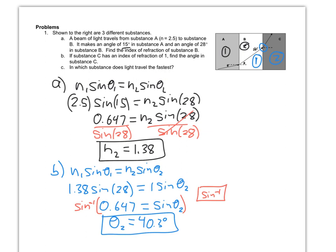The last question is conceptual: in which substance does light travel the fastest? That is substance C, because it has the lowest index of refraction, the lowest N value. We keep in mind that index of refraction measures how slow light travels, so the lower the index of refraction, the faster light is actually traveling.